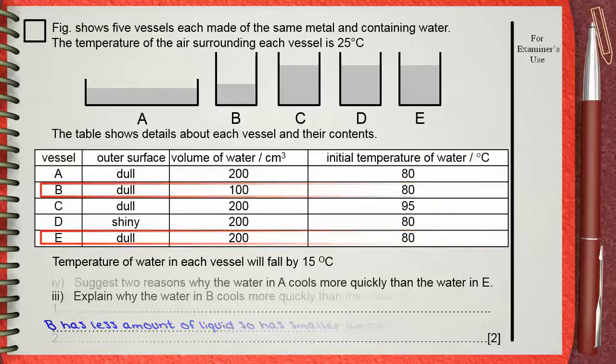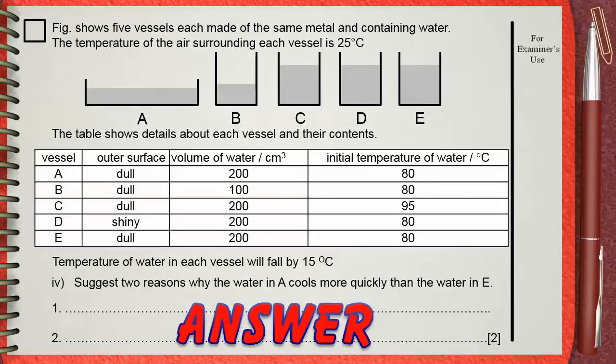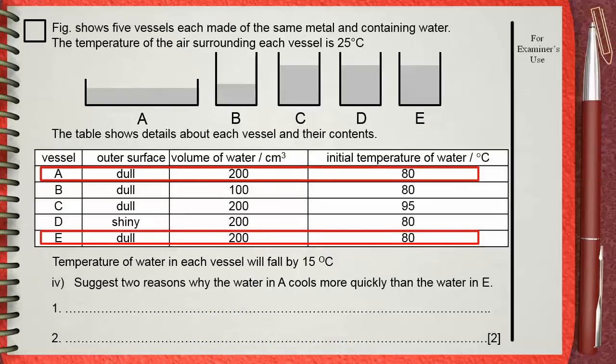Question 4: Suggest two reasons why water in A cools more quickly than water in E. Let's have a look at A and E. Actually, there are no differences between them, except the size of the vessel.